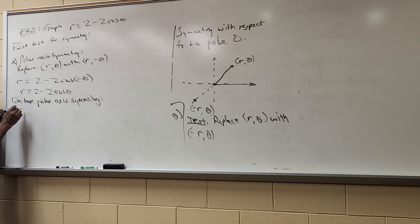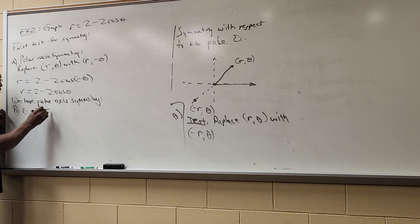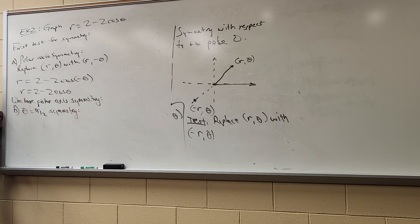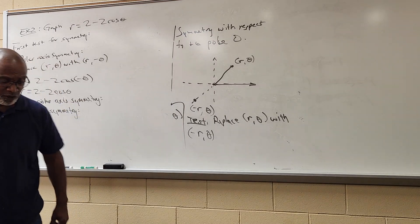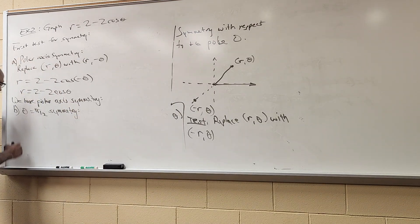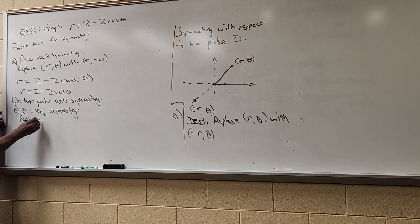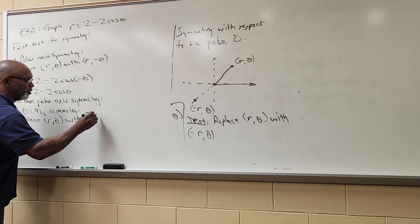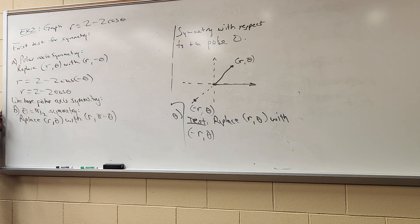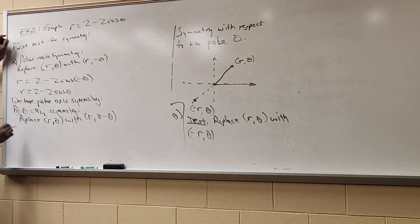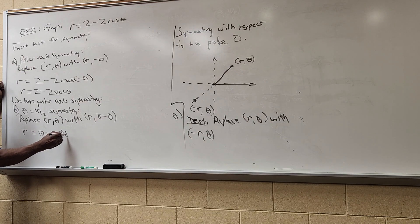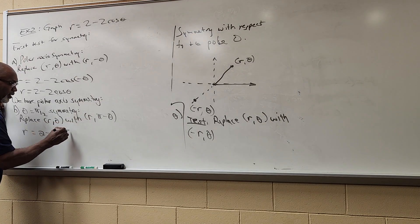Next, B: θ = π/2 symmetry. I want to see if my function is symmetric with respect to the line θ = π/2. The test is to replace (r, θ) with (r, π - θ). So I take my original equation r = 2 - 2cos and replace θ with π - θ: r = 2 - 2cos(π - θ).